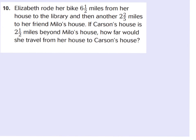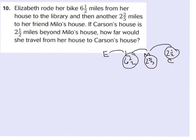Let's read the word problem: Elizabeth rode her bike 6 and a half miles from her house to the library, then another 2 and 2 fifths miles to her friend Milo's house. If Carson's house is 2 and a half miles beyond Milo's house, how far would she travel from her house to Carson's house? Our goal is to add these three distances together to get the final answer.